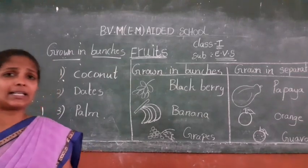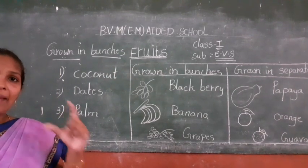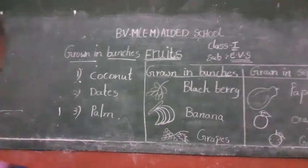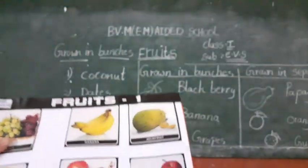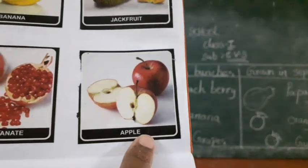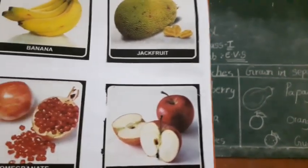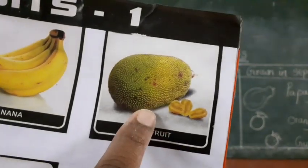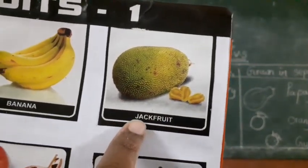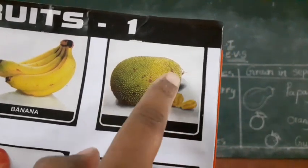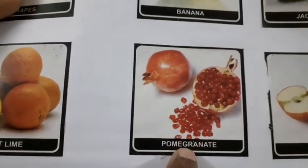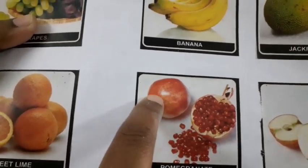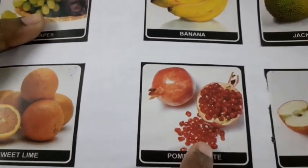Which fruits do we cut and eat? Apple - here is apple. We cut the apple and eat it. Next, which fruit do we cut? It's a jackfruit. We peel the skin of jackfruit, after that we eat the pieces. Next, pomegranate - we cut the pomegranate, peel the skin, and eat the seeds.